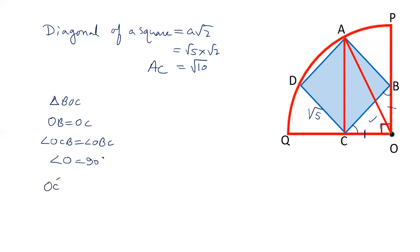So OC² plus OB² equals BC². BC is √5. Let's say OC is x. So x² plus x² equals (√5)², that is 5 equals 2x². So value of x² equals 5/2. Value of x is √(5/2), or you can also write √5/√2.